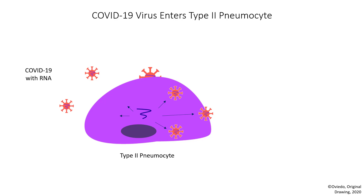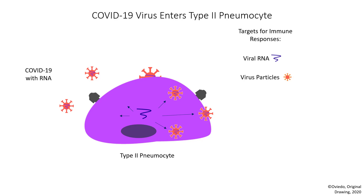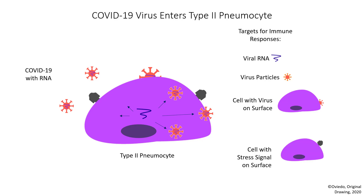A cell that has been infected with a virus will put out stress signals on its surface. This is how the infection has occurred, but you will notice this has given us numerous targets for an immune response. The targets include the viral RNA, the virus particles, the cell with virus on its surface, and the cell with the stress signal on its surface.